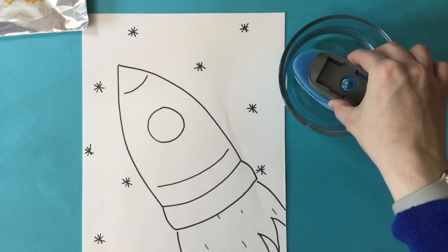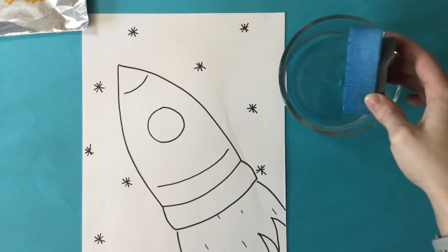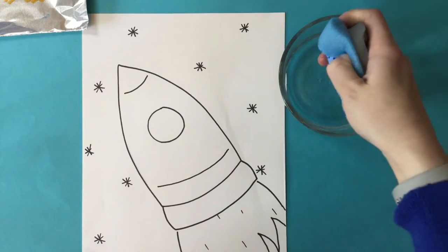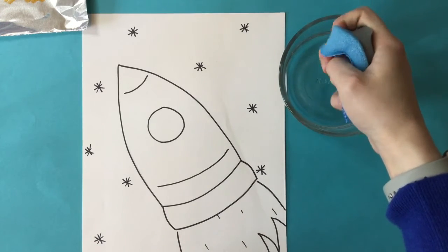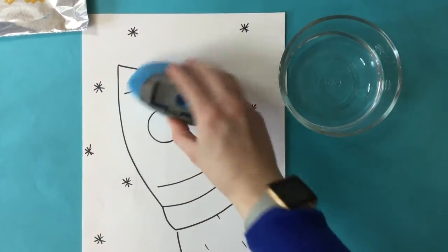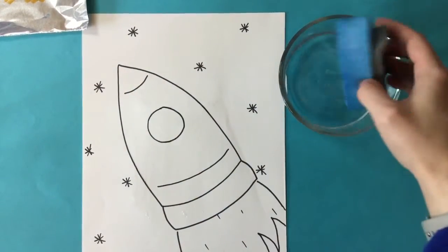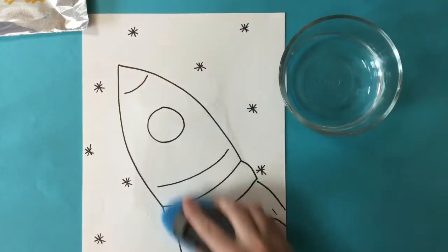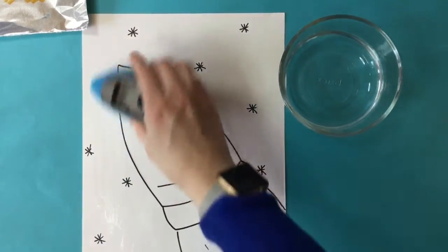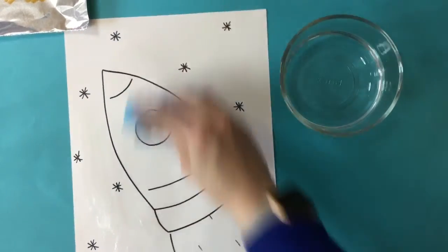I'm going to use my sponge. You want to soak your sponge in the water, but I'm going to wring it out so I don't have too much water on my sponge. I just want my paper to be nice and wet, but not totally soaked and dripping. You shouldn't see any puddles of water on your paper.